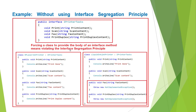As you can see in this diagram, we have an interface called IPrinterTask with four abstract methods. Now if any class wants to implement this interface, that class must provide implementation for all four methods — print, scan, fax, and print duplex. As you can see in the diagram, we have two classes: HP LaserJet Printer and Liquid Ink Printer.